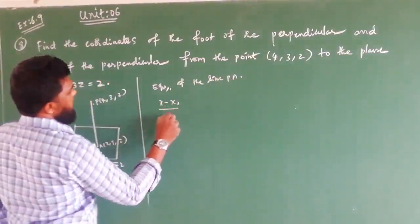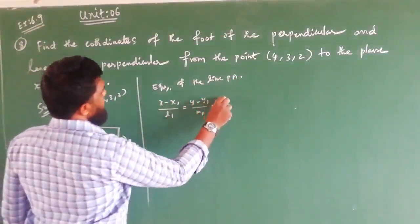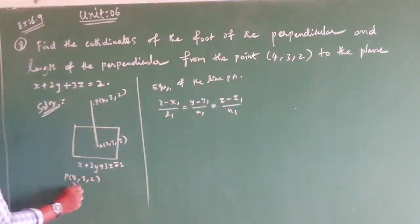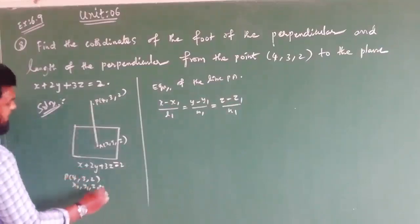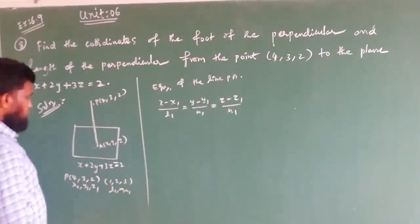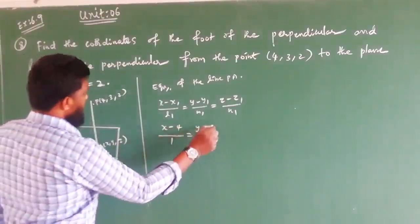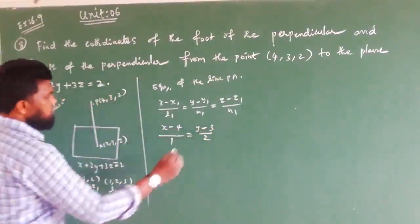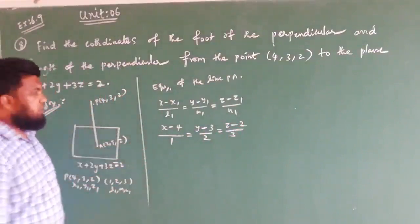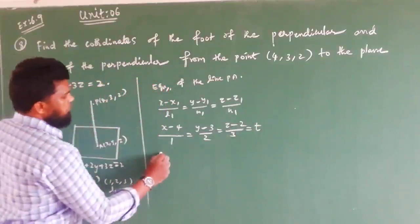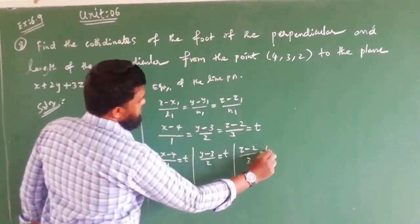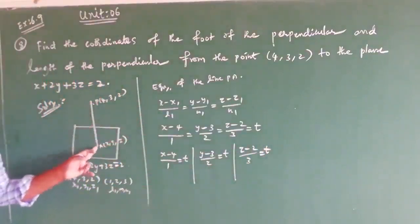The equation of line PA uses the fundamental theorem: x minus x1 by L1, y minus y1 by M1, and z minus z1 by N1. Here (x1, y1, z1) is the point (4,3,2) and (L1, M1, N1) are direction ratios (1, 2, 3). So we write: x minus 4 by 1 equals y minus 3 by 2 equals z minus 2 by 3, and set each equal to T.